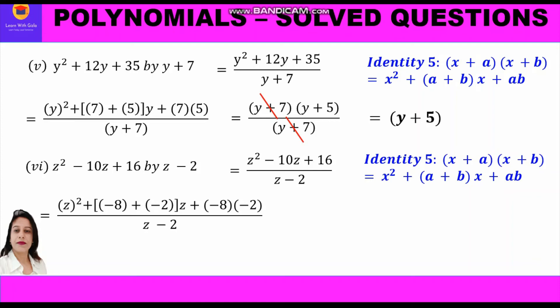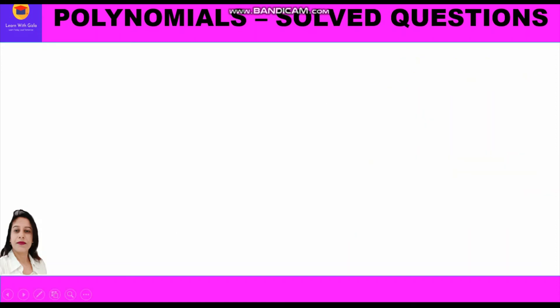We substitute all values in the identity and write in the numerator: z² + (−8 + −2)z + (−8 × −2) upon (z−2). We get two factors: (z−8)(z−2) upon (z−2). Now (z−2) cancels, and we are left with the answer z minus 8.